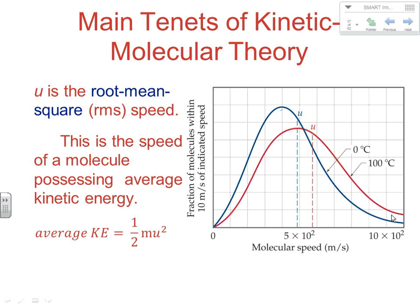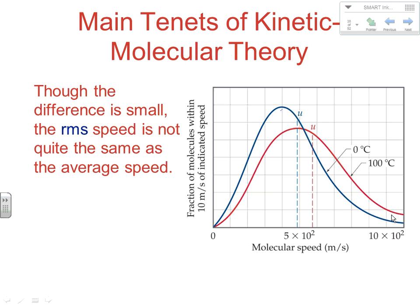Temperature is proportional to average kinetic energy, which is proportional to both the average speed and the root mean square speed. The difference between RMS and average speed is very, very small, so we often use them interchangeably, but they're not quite the same thing. RMS speed is the speed of a particle at average kinetic energy, not the average speed of a particle. The actual calculation for RMS speed equals the square root of 3RT over big M (molar mass). So if you put in your temperature and plug in your molar mass, you can calculate the RMS speed.